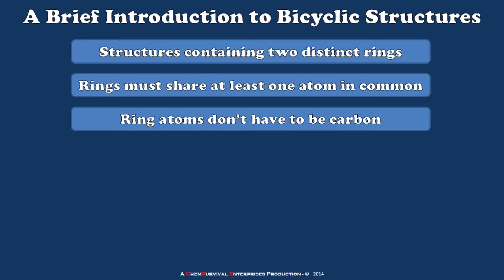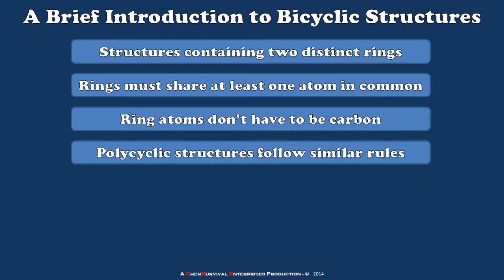It is possible to have oxygen, nitrogen, and even more exotic heteroatoms in bicyclic structures. And we'll talk a little bit about polycyclic structures early on just to show you some examples of more complex molecules, but they follow similar rules, and that's why we give you this introduction during your organic chemistry course.